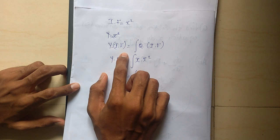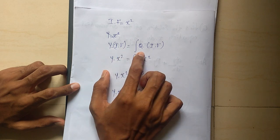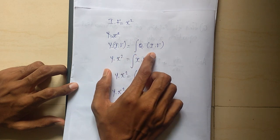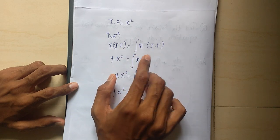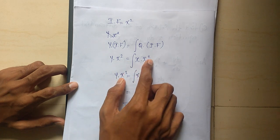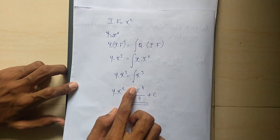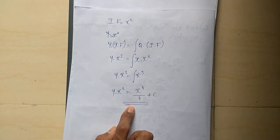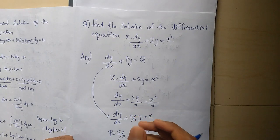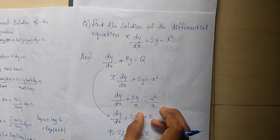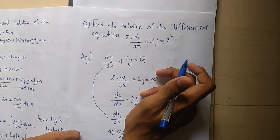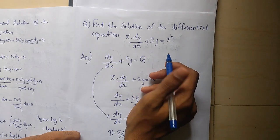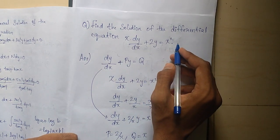Y into integrating factor equals Q into integrating factor. We substitute y into integrating factor and integrate. We will try to simplify using the formula.